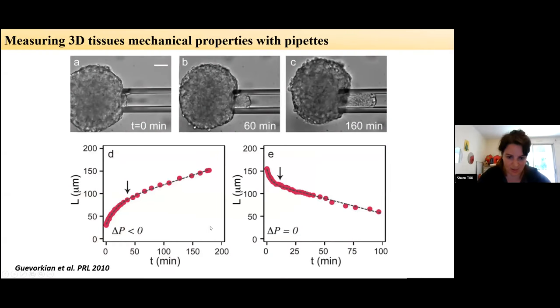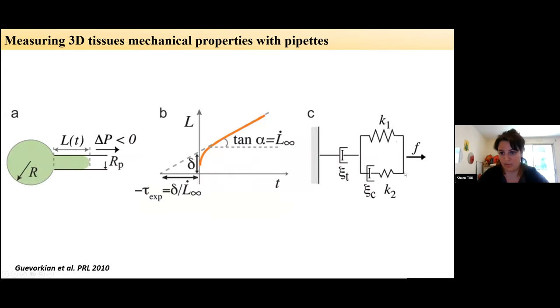So there were nice techniques developed these last years, actually. And one that is quite powerful is micro-pipet aspiration. So this is a work from Karine Gabor-Kyon that has almost 10 years old now, where you can just apply your pressure difference through pipet to a tissue and then measuring the dynamics of aspiration of the tissue, you can infer tissue mechanical properties.